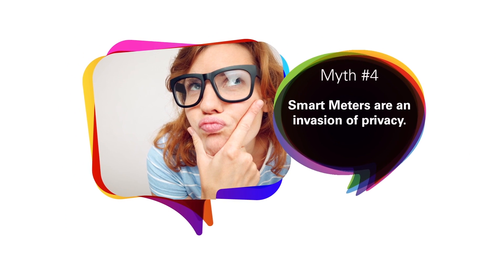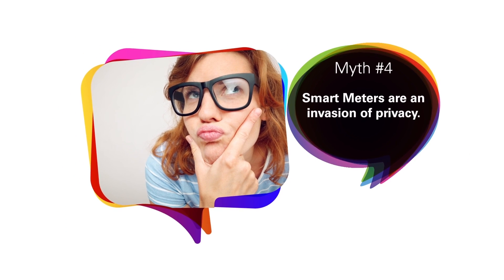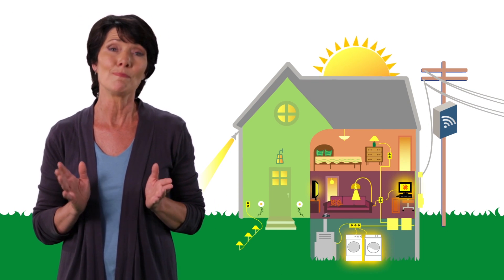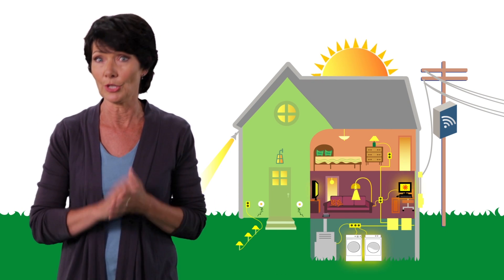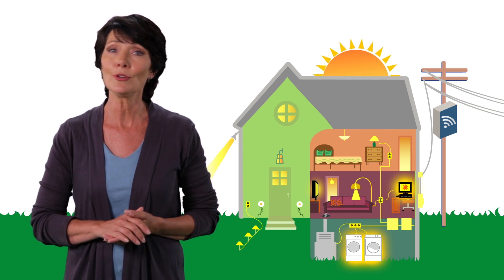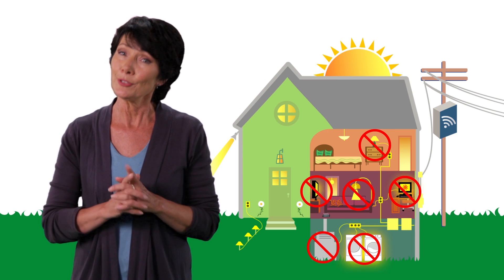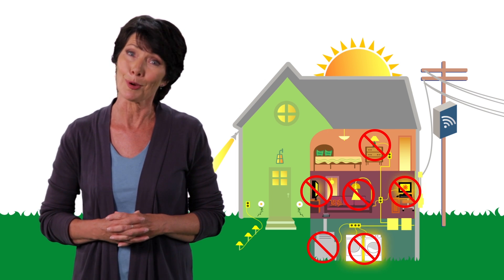Myth number four, smart meters are an invasion of privacy. Fact, smart meters measure how much energy you use. That's all. They don't know if you're using your oven, air conditioner or hair dryer. How you use your electricity is your business.